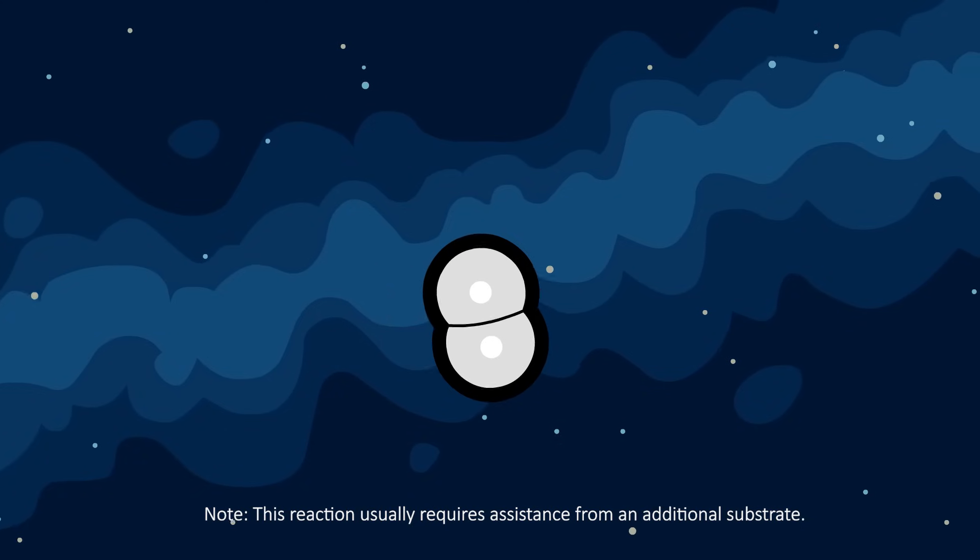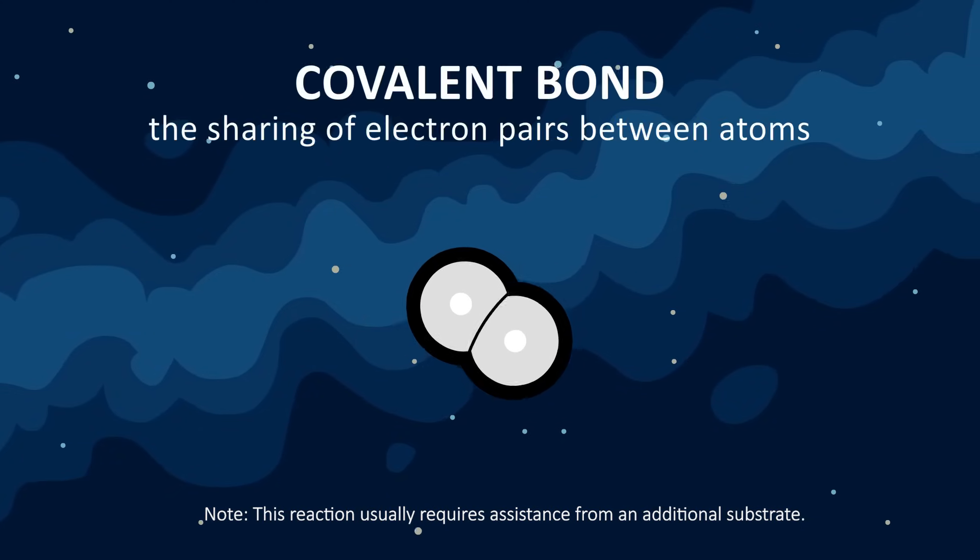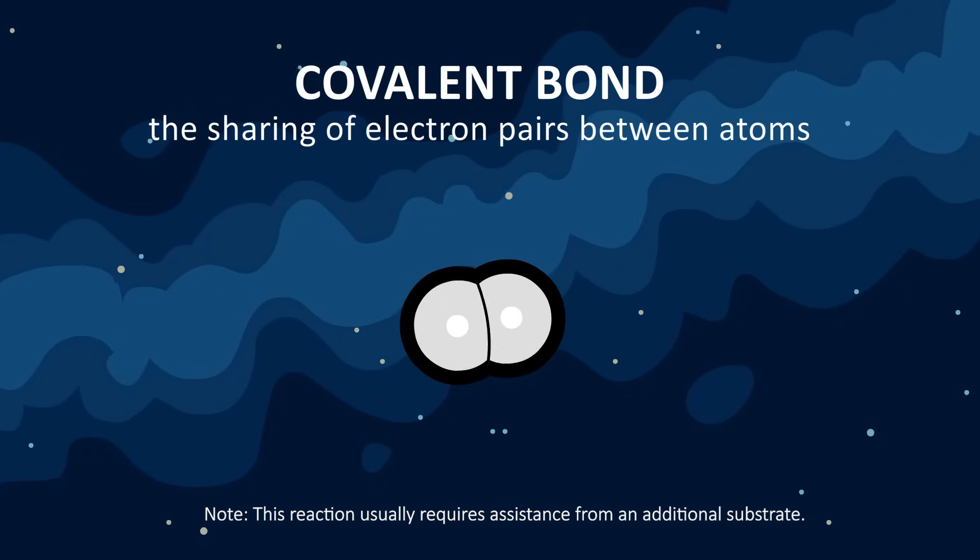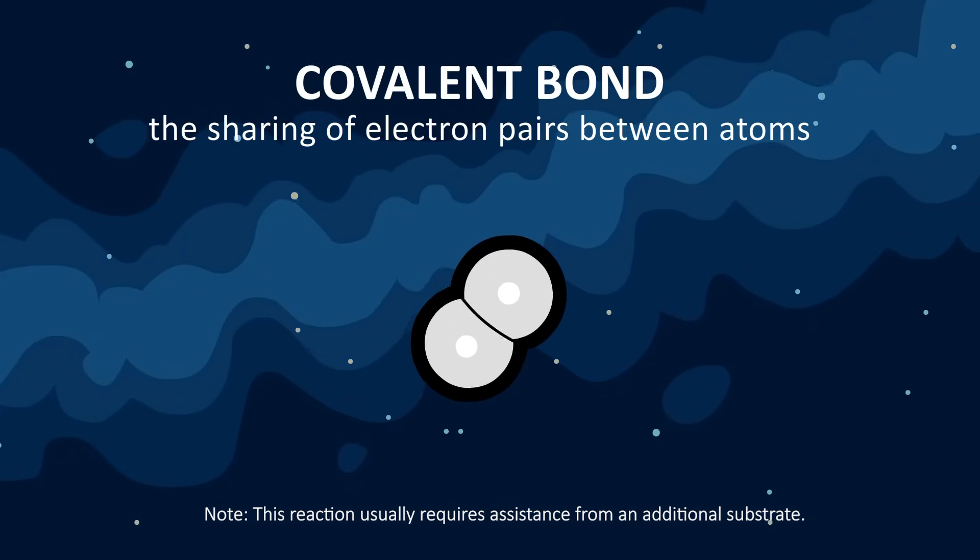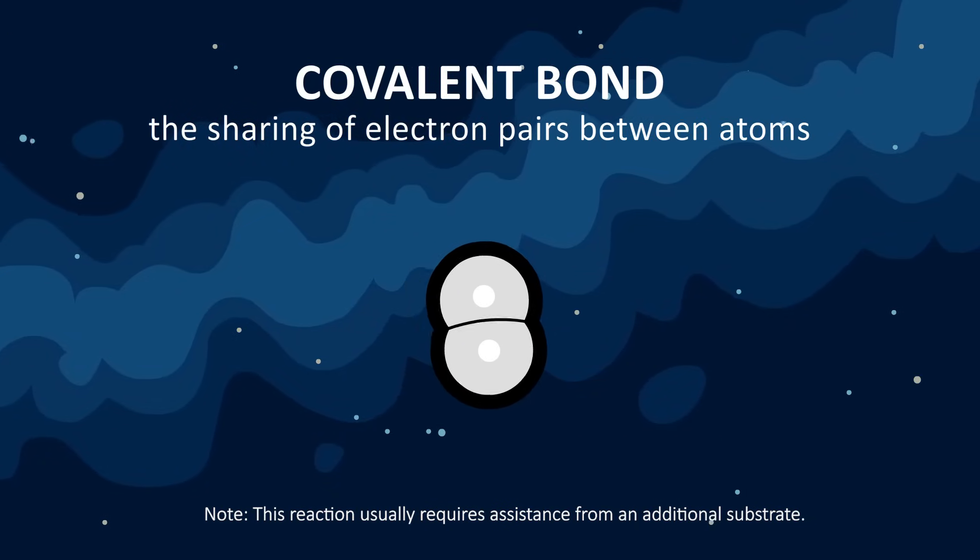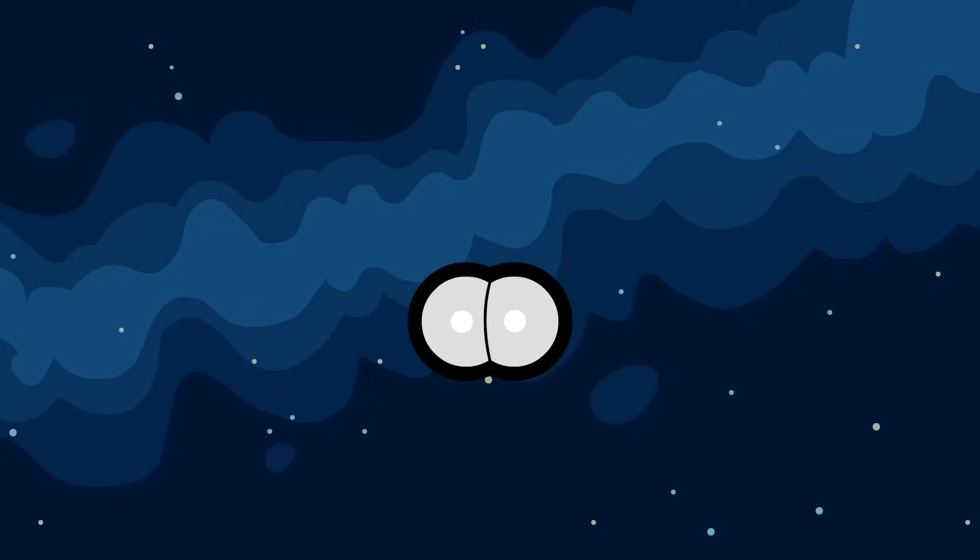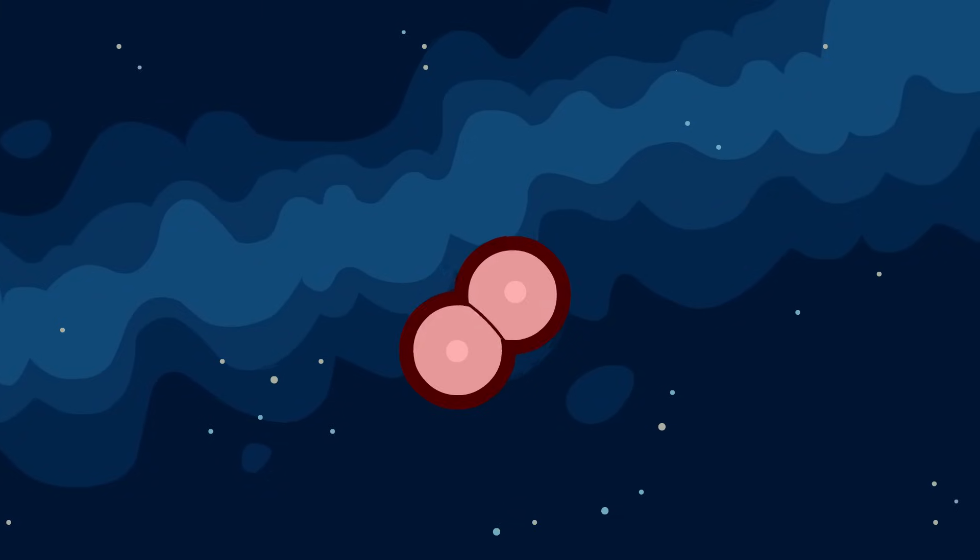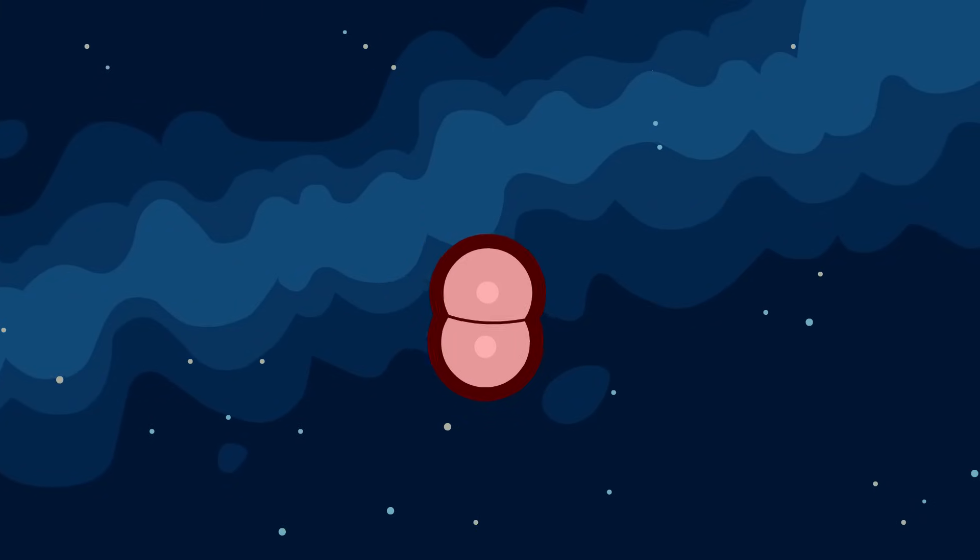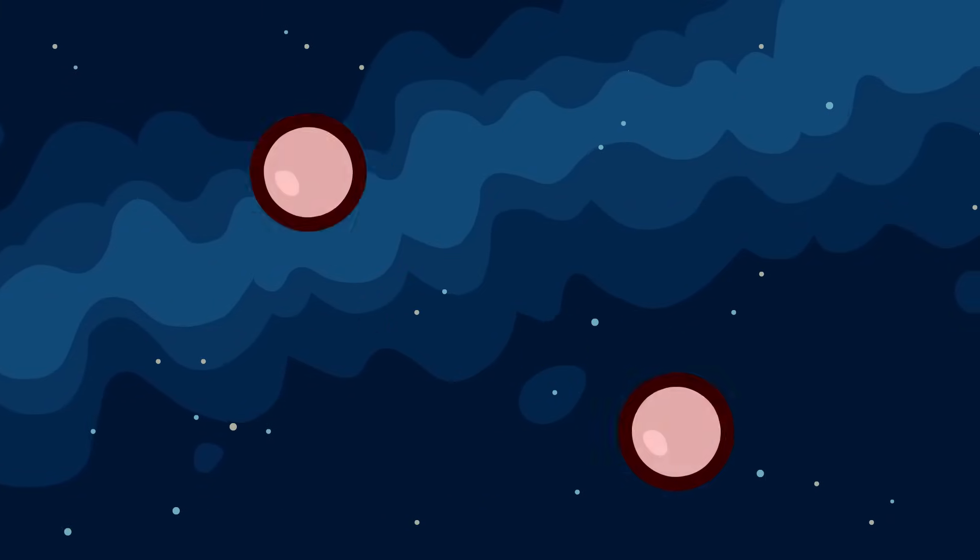The two atoms now share each other's electrons in what is called a covalent chemical bond. What were once two individual hydrogen atoms have now formed a single hydrogen molecule. This bond is not permanent. With enough heat or due to interactions with other molecules, the hydrogen atoms will readily separate once more.